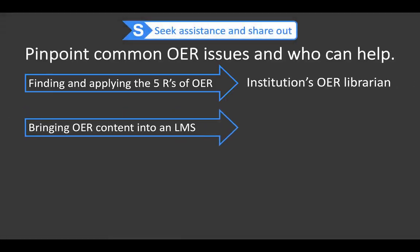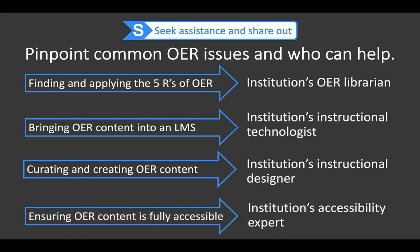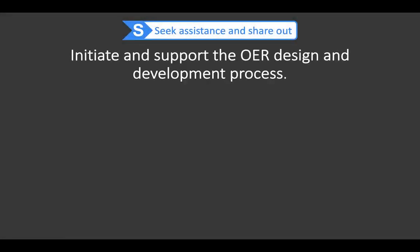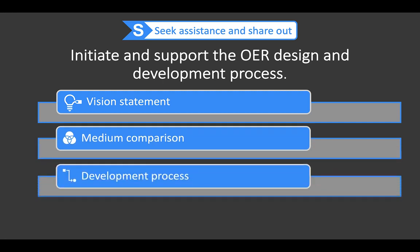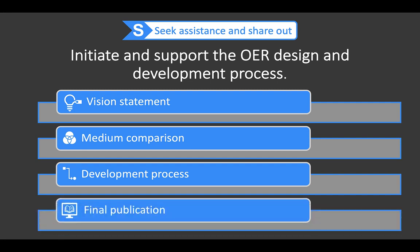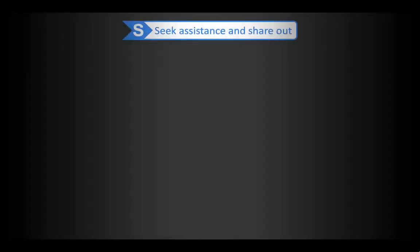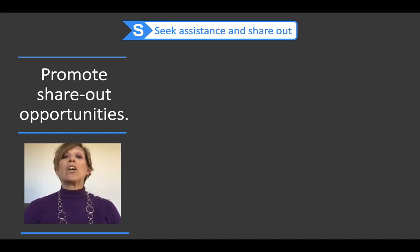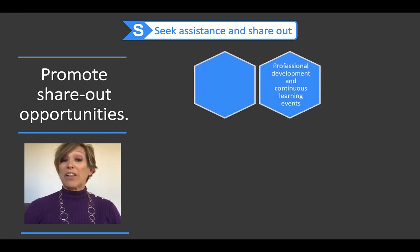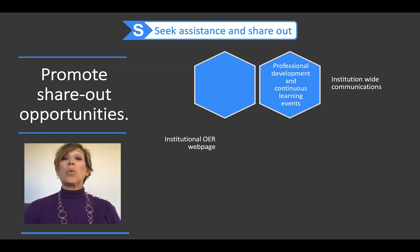The last part of the model includes pinpointing common OER issues and identifying who can help. Then initiate and support the OER design and development process where creators cast their vision for their published OER, compare medium tools for housing their OER, and then map out a process for creating, editing, and publishing their OER. OER advocacy includes contributing to the OER community, equipping others in their OER pursuits, sharing OER sources, strategies, creations, and successes through professional development and continuous learning opportunities. Institution-wide communications and webpages raise OER awareness, promote their use, and strengthen their impact.